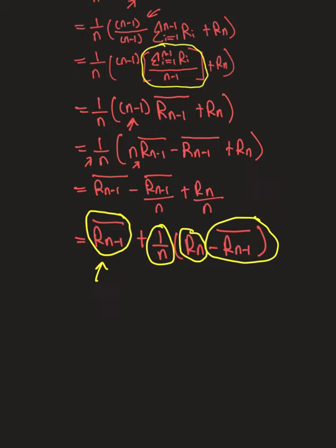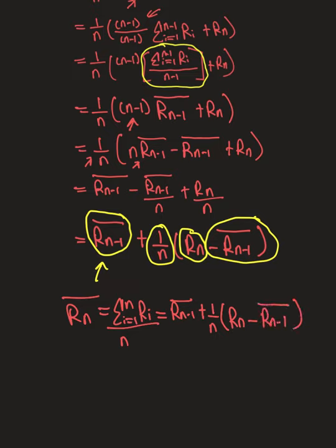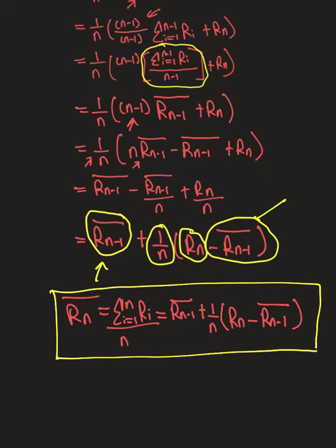We're going to box this formula and write it again: the new average, which is defined conventionally as the sum over all the rewards divided by the number of things, is equal to Rn minus one bar, the previous average, plus one over the new number of things, times our new reward minus our previous average. That is not an approximation; these things are exactly equal. If we already have Rn minus one bar, we keep track of n, and we look at our new reward, that's all we have to do. It's going to save memory and time. That was really the goal of today's lecture: to derive this awesome formula. Hopefully it makes sense. Thank you so much for listening, I'll see you in the next video. Bye.